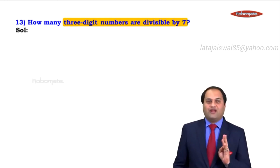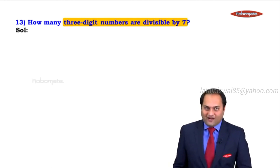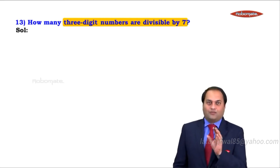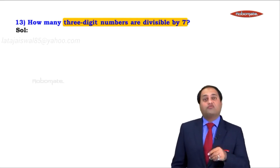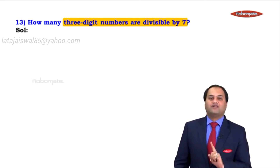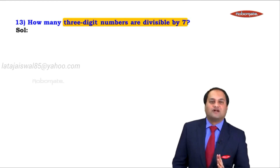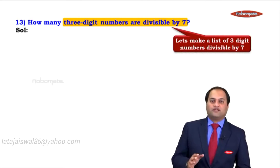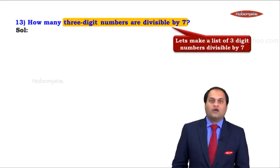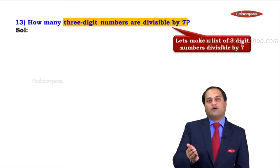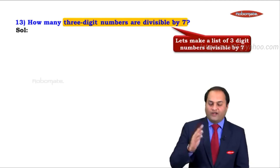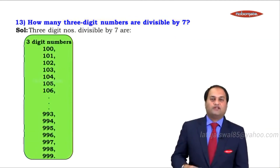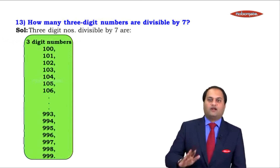To find the value of N, we should know the values of A, D, and AN — but for that we need a proper AP. The condition given is: three-digit numbers divisible by 7. So let's make a list of all three-digit numbers that are divisible by 7. Three-digit numbers start at 100 and end at 999.